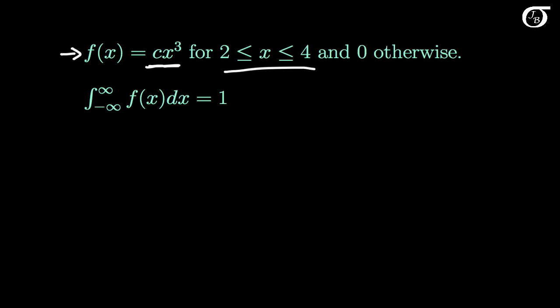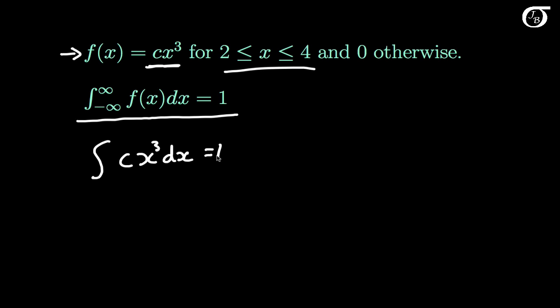The second condition is that the area under the entire curve must equal 1. So the integral from minus infinity to infinity of f dx must equal 1. Here the integral of c times x cubed dx has to equal 1. But we're not going to integrate from minus infinity to infinity, because the PDF is only defined between 2 and 4 — outside of there it's 0. So we're simply going to integrate this between 2 and 4.